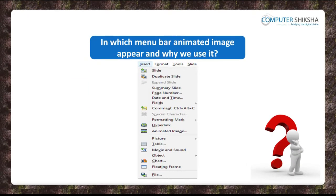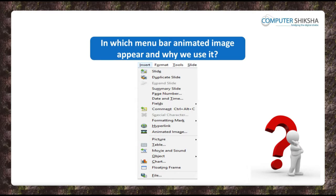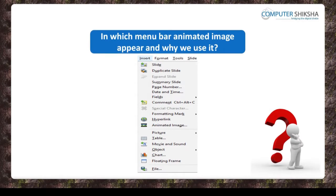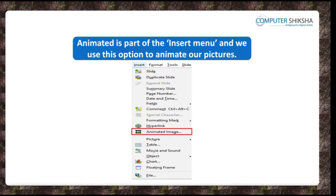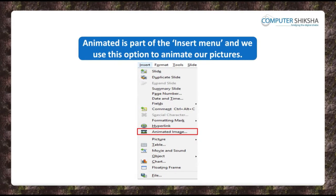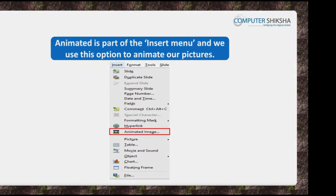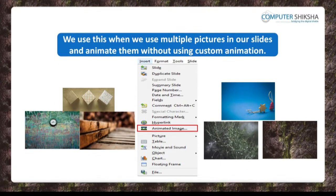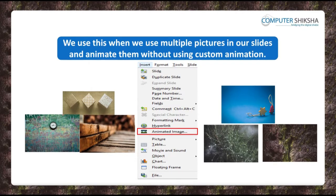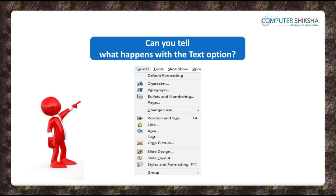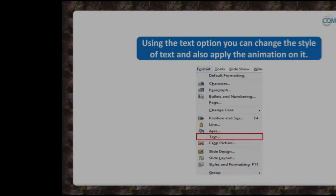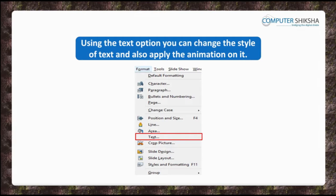In which menu bar does the option for Animated Image appear and why do we use it? The Animated Image option is a part of the Insert menu. We use this option to animate our pictures so that we can see them appear to be playing when we see them in a slide show. We use this when we insert multiple pictures in a slide and animate them without using custom animation. Can you tell what happens with the text option? You can use the text option to change the text of your object.